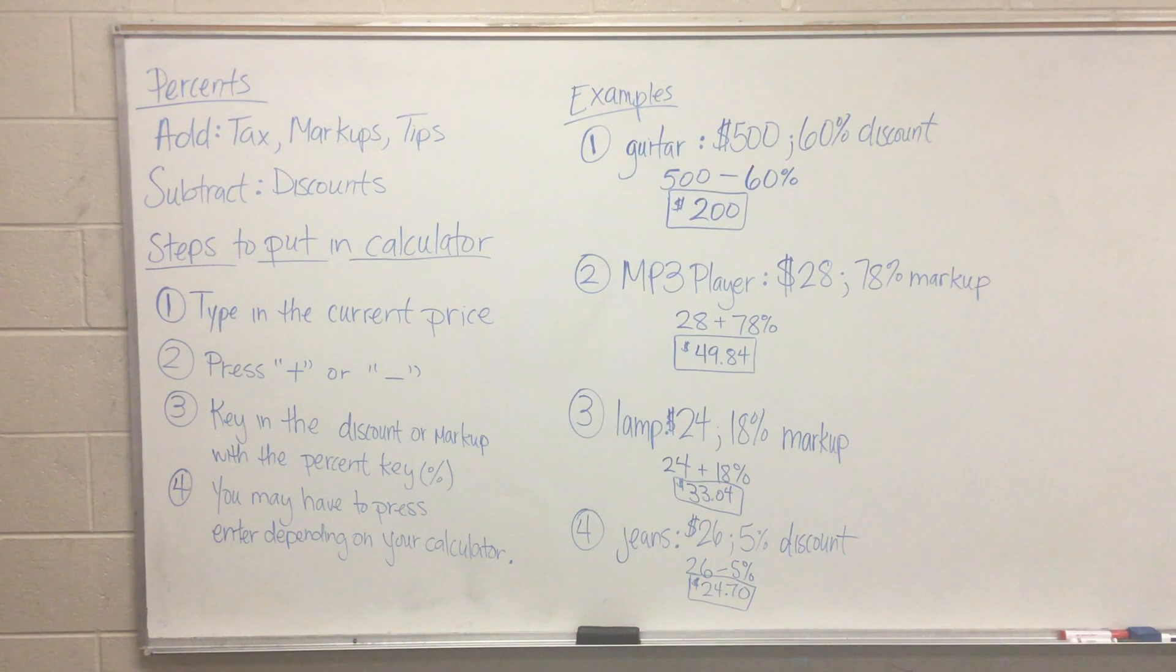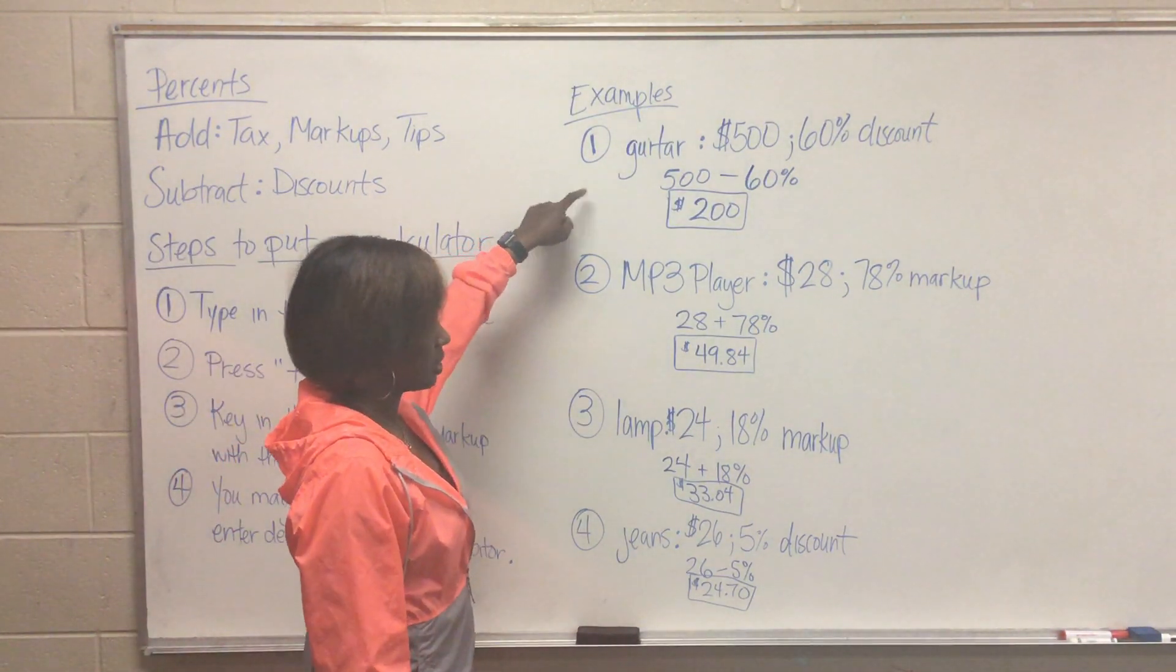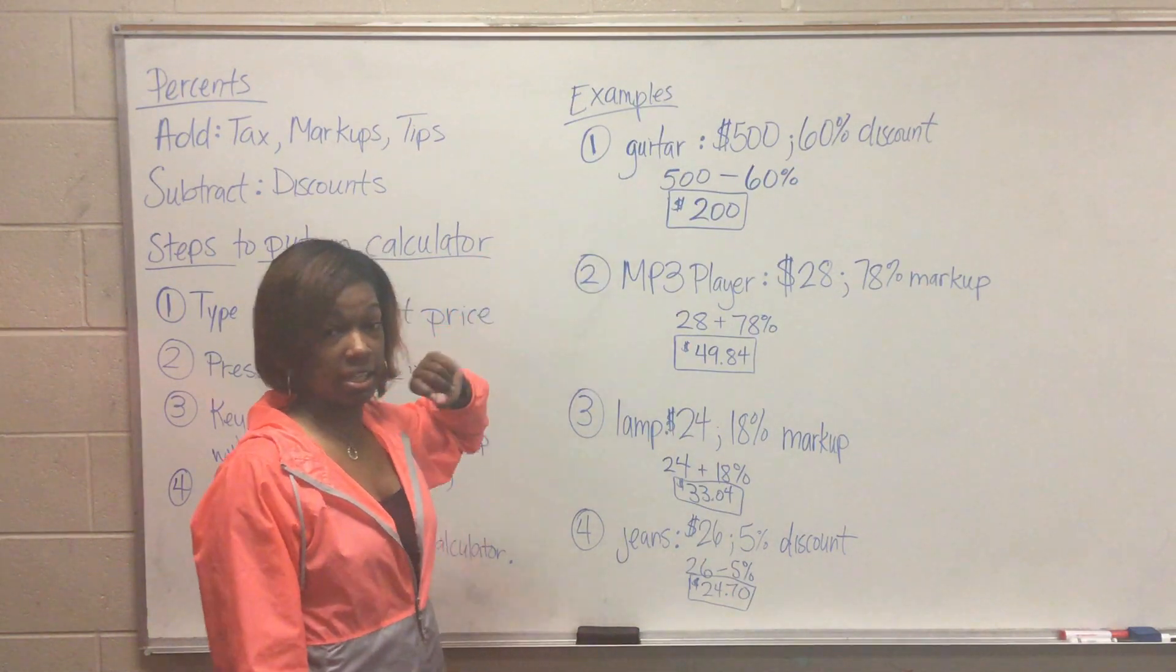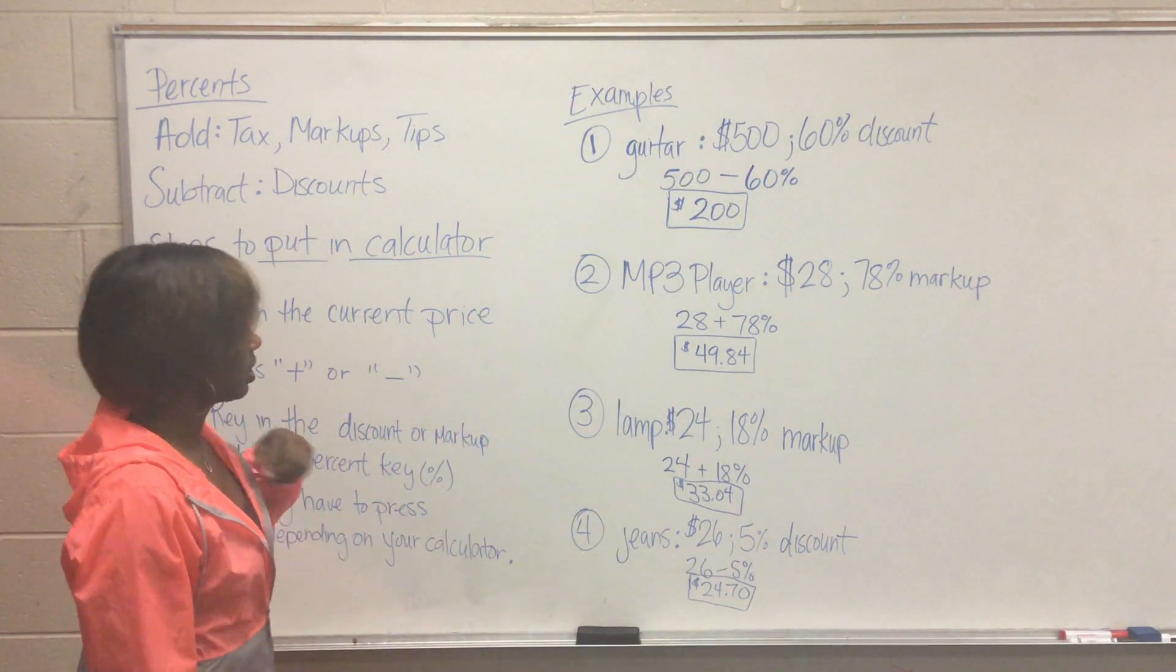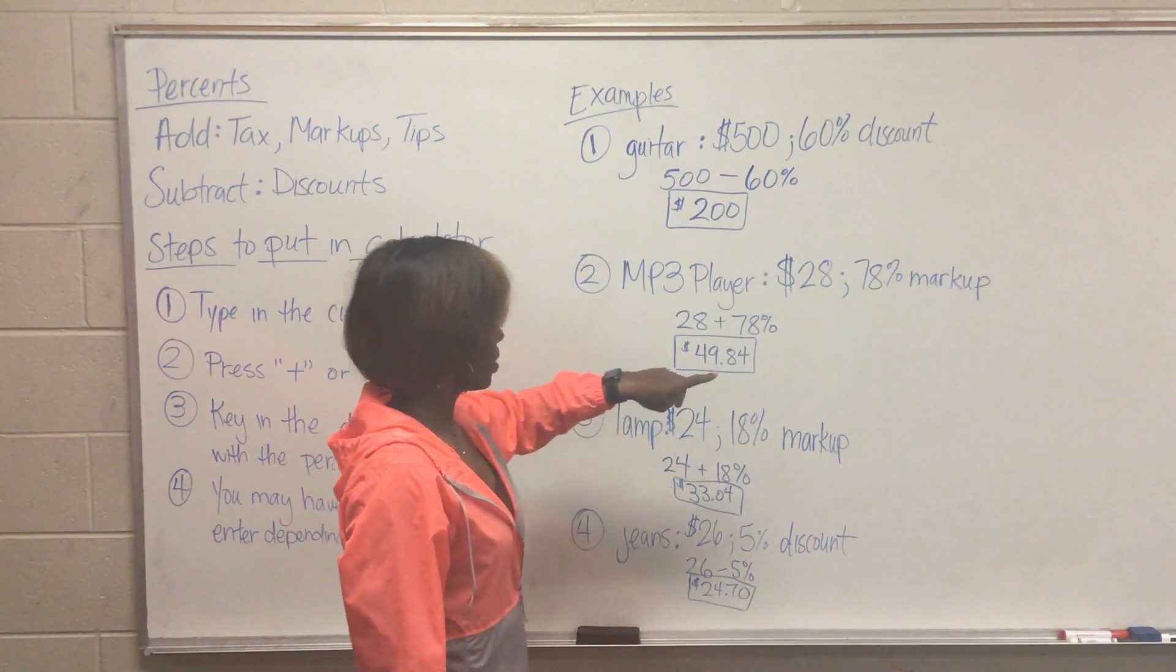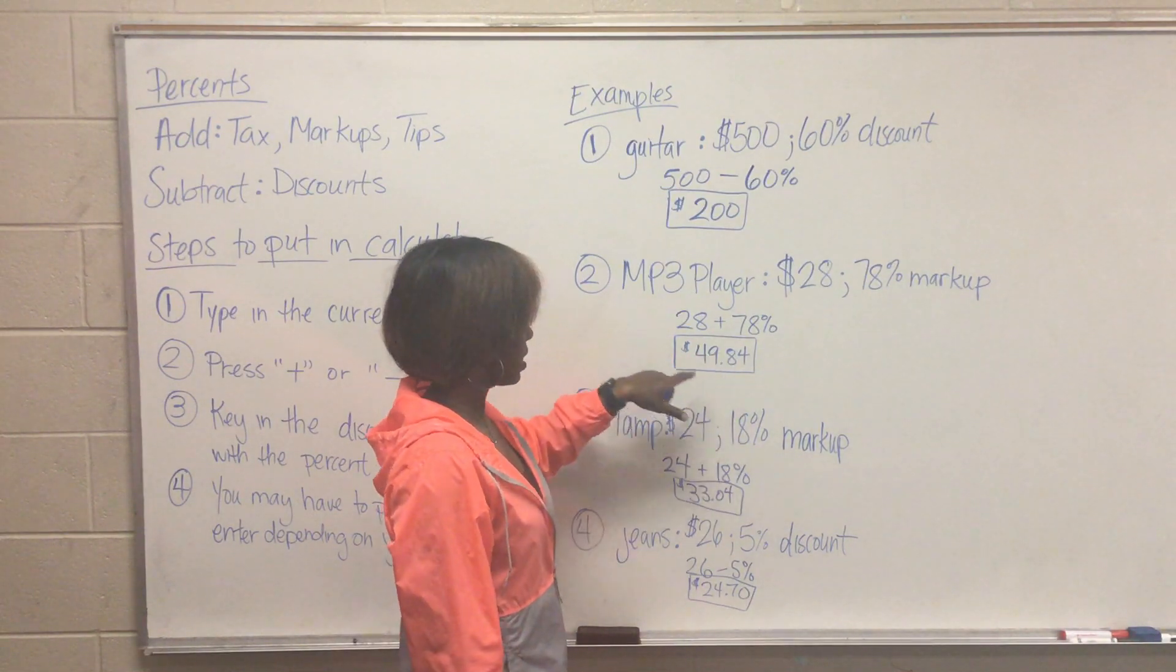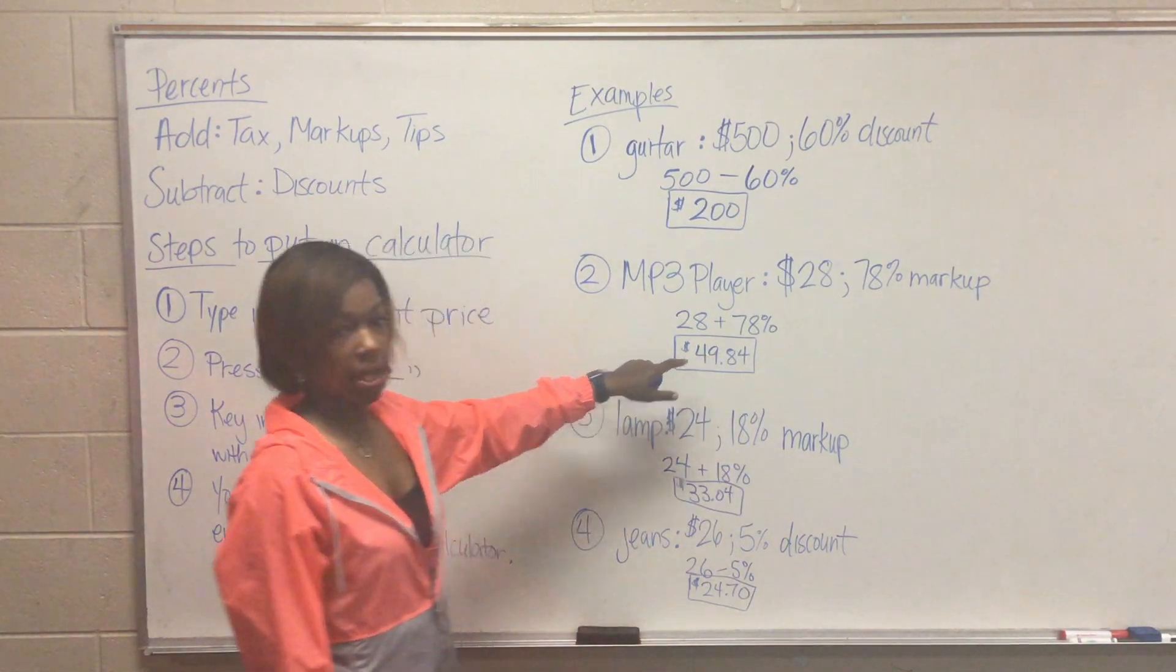If you have any questions on whether you have to press enter on your calculator, you can find that out in number one. If you get $300 for number one, then that is indeed a calculator that you have to press enter after this point. Same for here. If you got $21 and some change for number two, then you will have to press enter in order to get this answer.